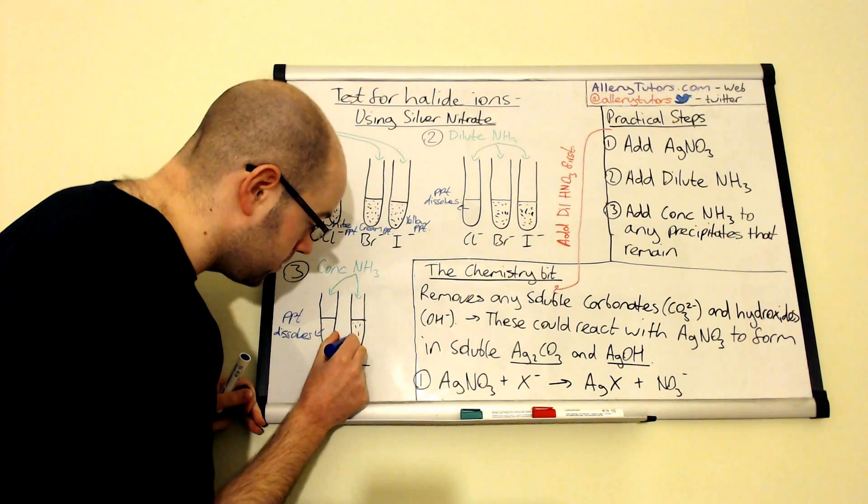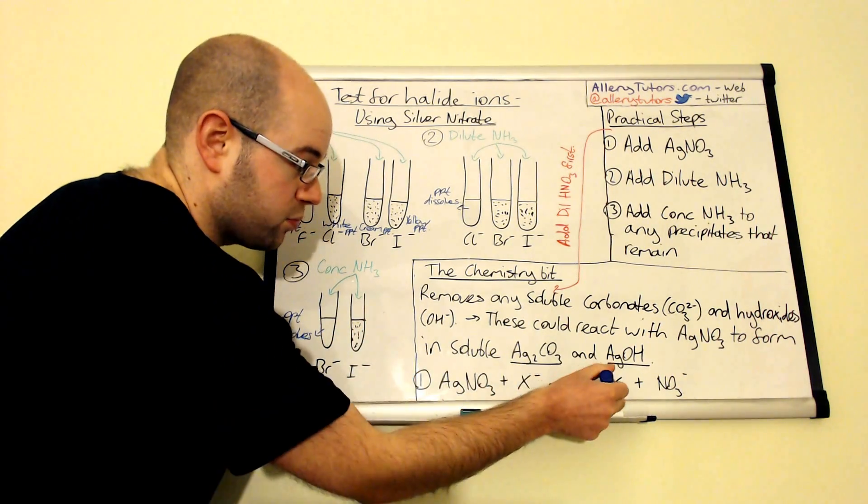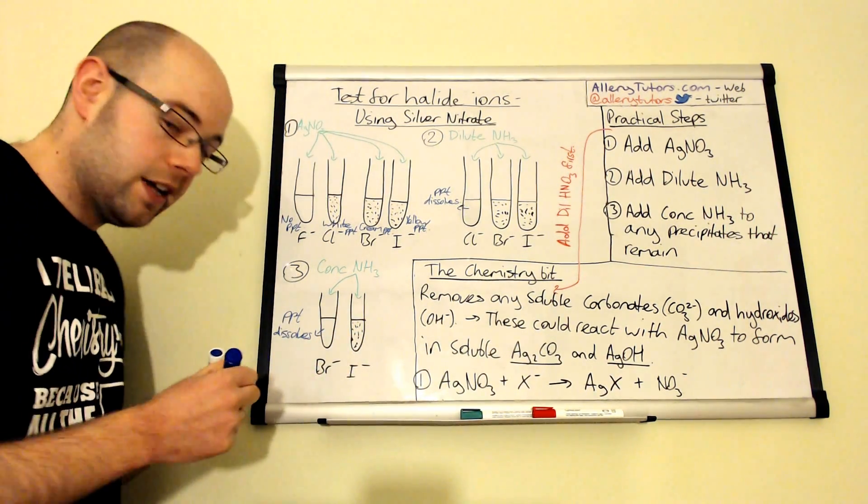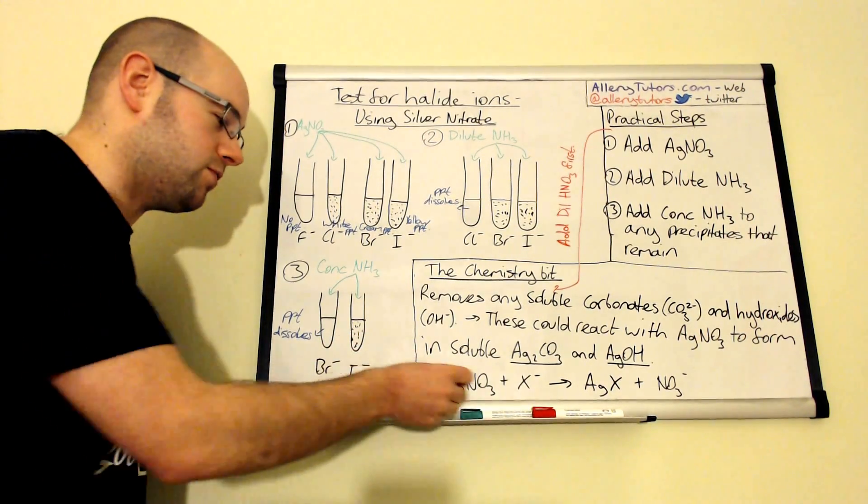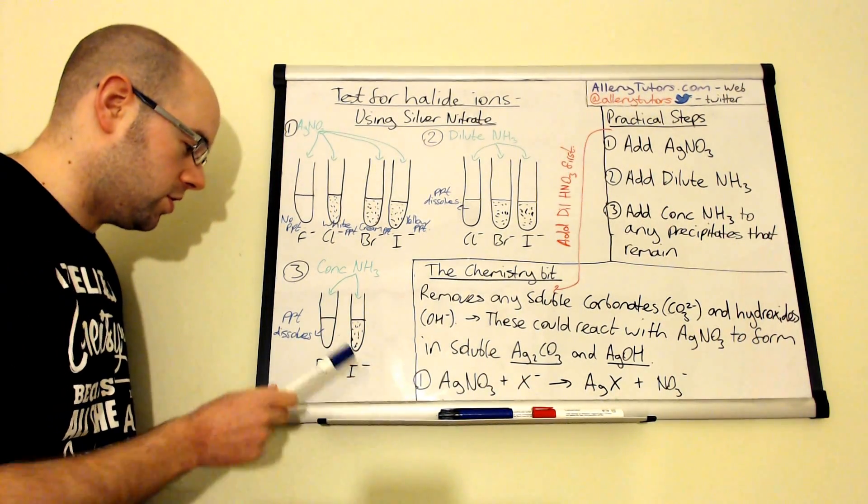What this tells you is actually your silver iodide, which is the product here, that's the yellow in there, is actually really insoluble. It really struggles to dissolve in your solution. Your bromide, silver bromide, will dissolve just with concentrated ammonia.